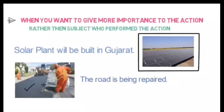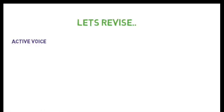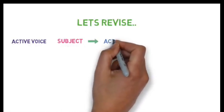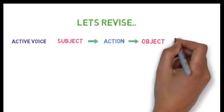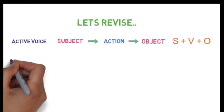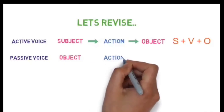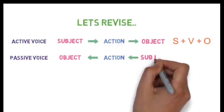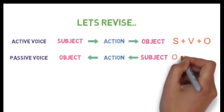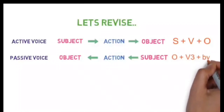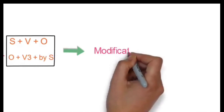That's all for this video. Let's quickly recap what we learned today. First, active voice: the subject performs the action and the object receives the action. Sentence structure: Subject + Verb + Object. Then passive voice: more importance is given to the object and the action being performed rather than the subject. Sentence structure: Object + third form of the verb + by + Subject.